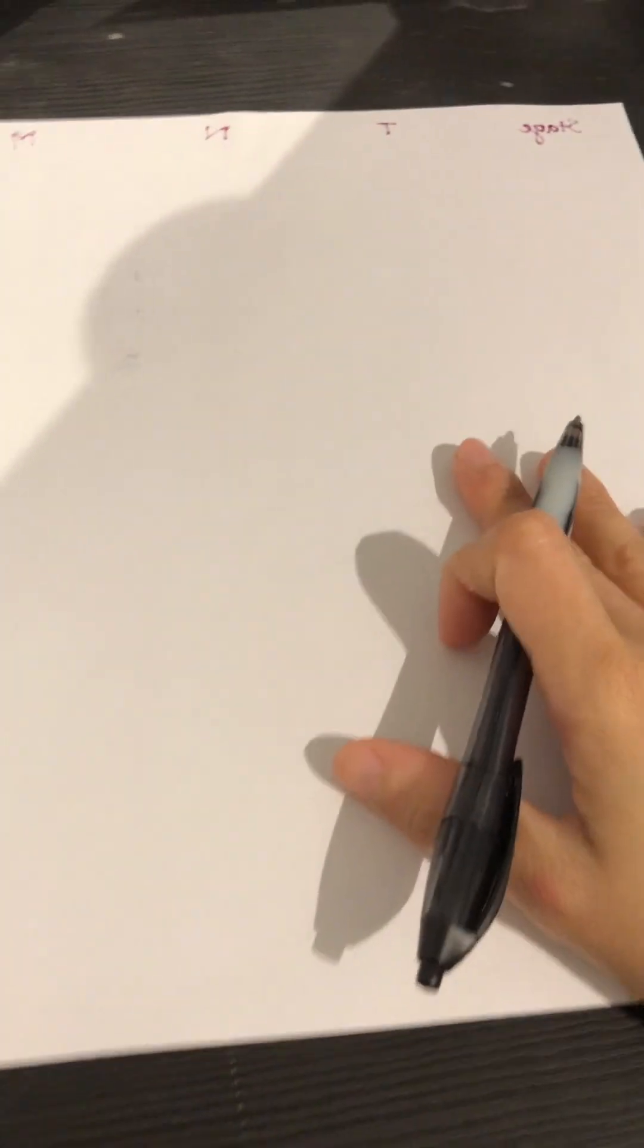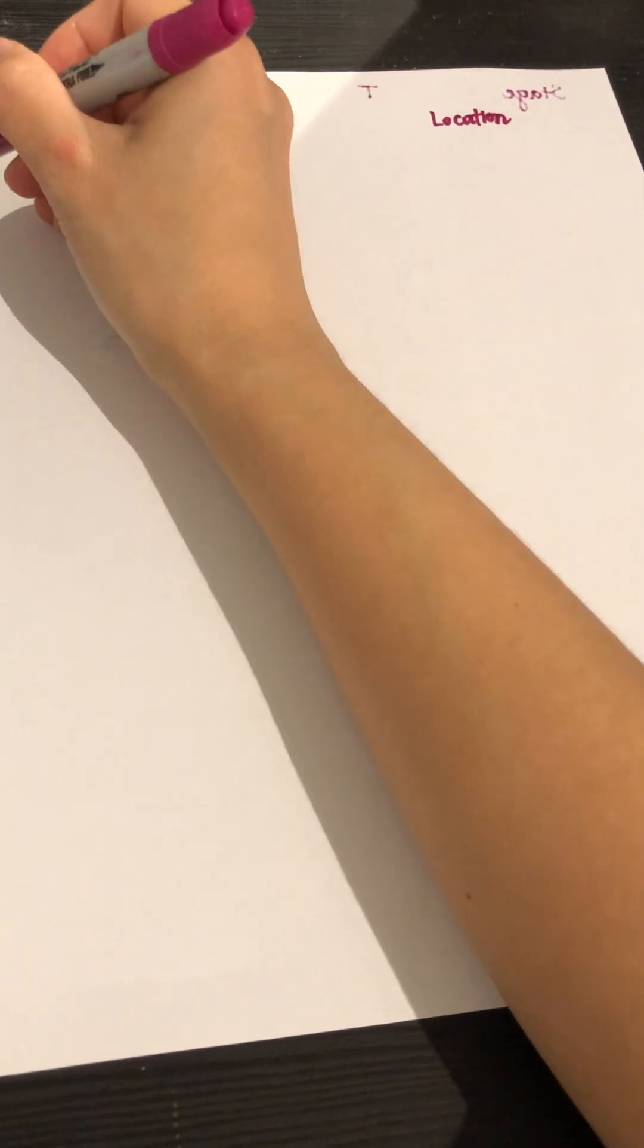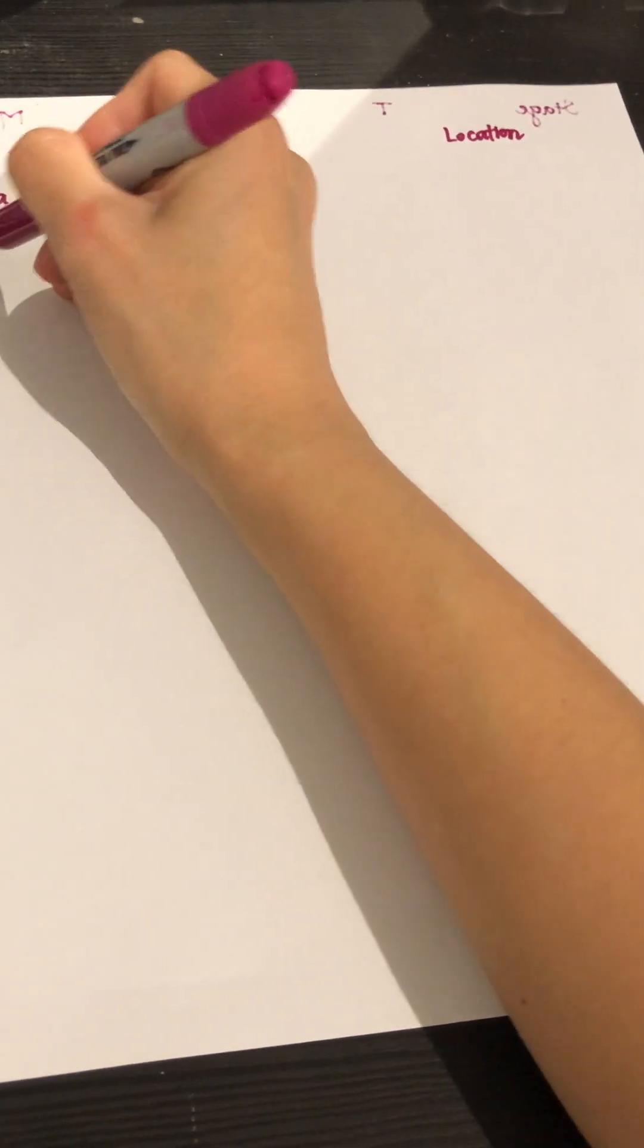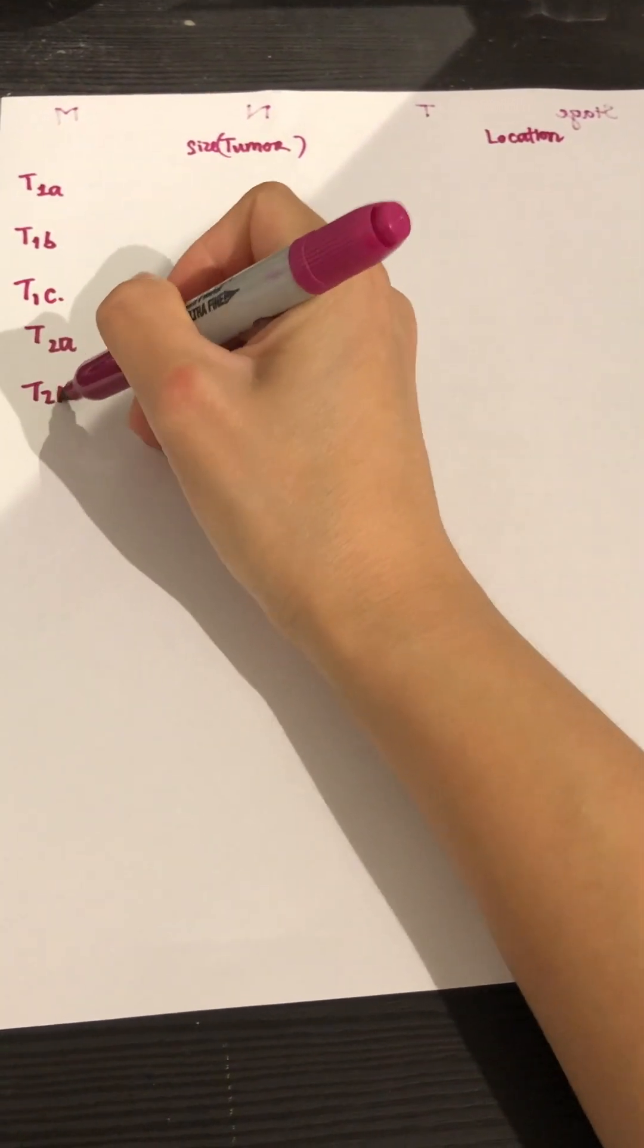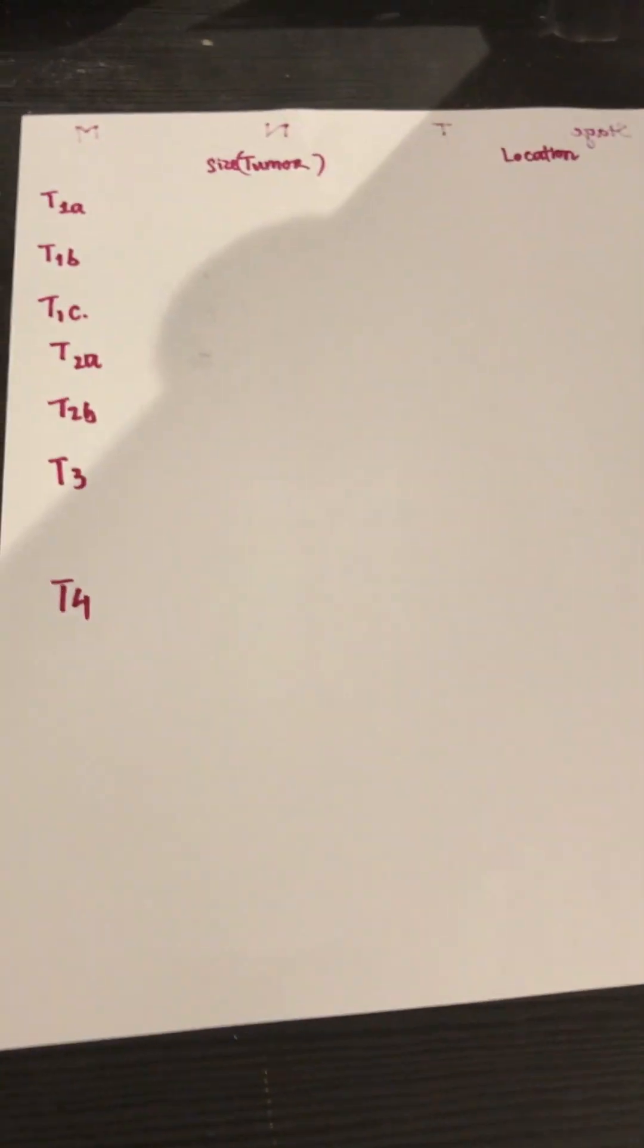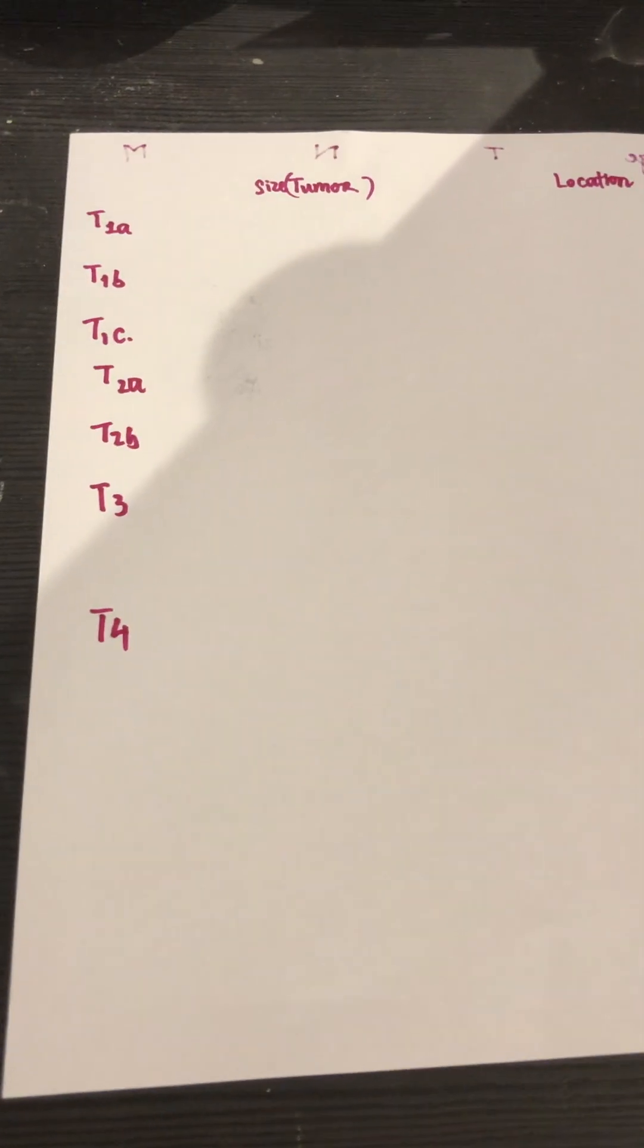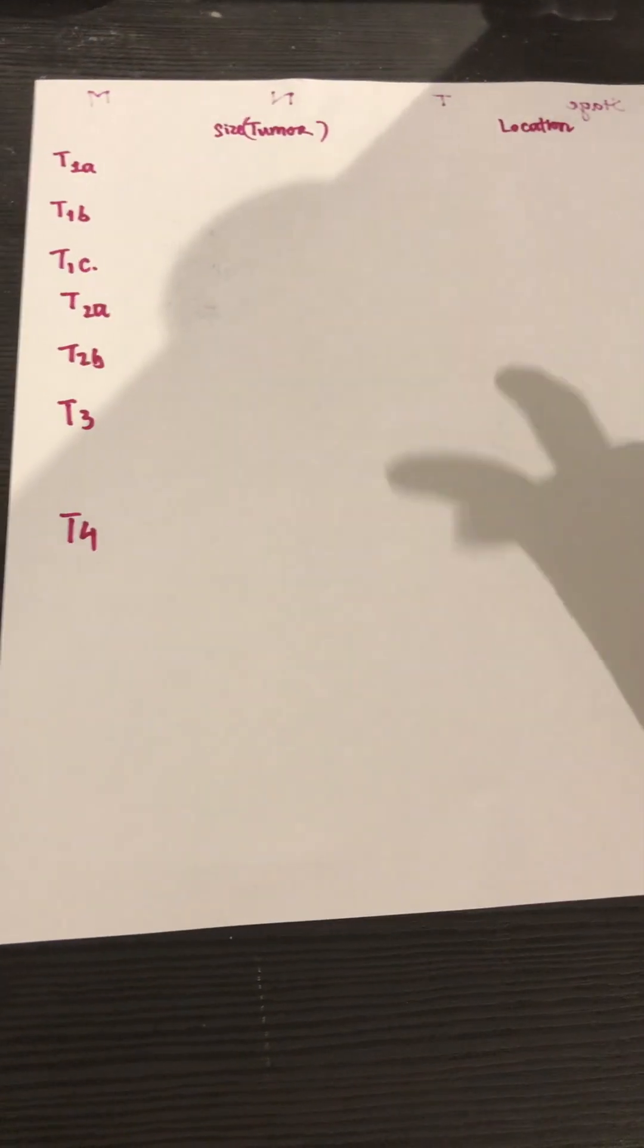Similarly, there are ways to memorize T stages as well. So to memorize T staging, you have to know the size of the tumor, and then the location of the tumor, and whether it invades anything else around it. And then there will be so many T stages in here. I'm T4. So how to memorize that? Too many things. I'll have trick as well.